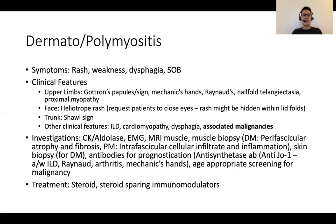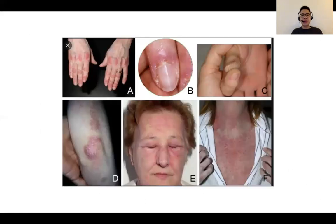Treatment generally involves steroids and steroid-sparing agents. This slide shows images from the internet illustrating Gottron's papules, nailfold telangiectasia, mechanic's hands, Gottron's sign, heliotrope rash, and Shawl sign.